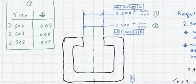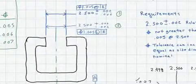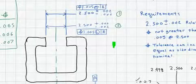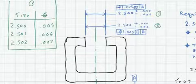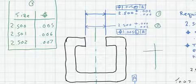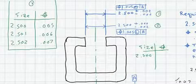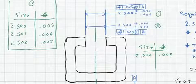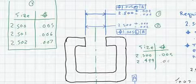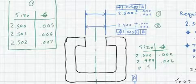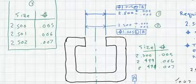Let's verify the other positional definition. For item number two, charting size versus position: the least material condition size is two inches five hundred, and at that size I'm allowed five thousandths. As I diverge from LMC to MMC — getting smaller — at two inches four ninety-nine, I diverge by one thousandth and I'm allowed six thousandths. At two inches four ninety-eight, I've diverged by two thousandths and I'm allowed seven thousandths.